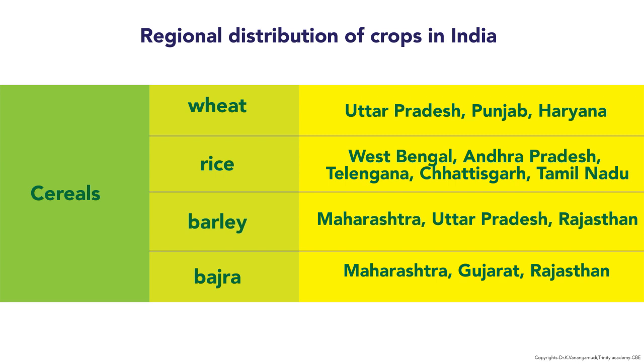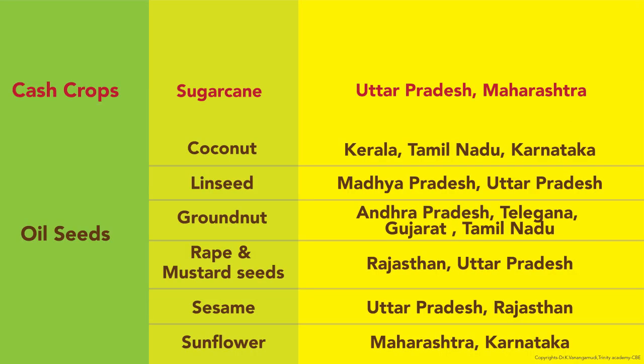Bajra (pearl millet) is cultivated in Maharashtra, Gujarat, and Rajasthan. Regarding cash crops: sugarcane is grown mainly in Uttar Pradesh and Maharashtra. Coconut is cultivated in Kerala, Tamil Nadu, and Karnataka.